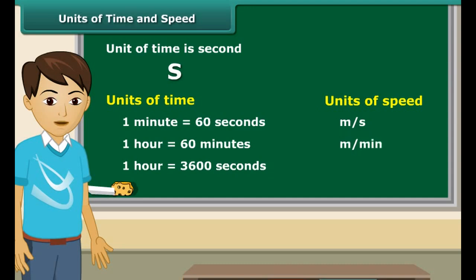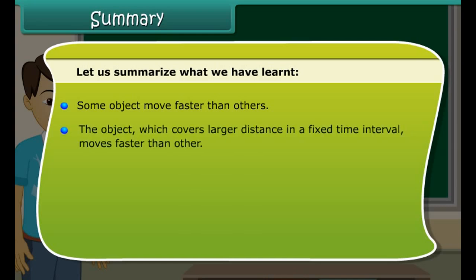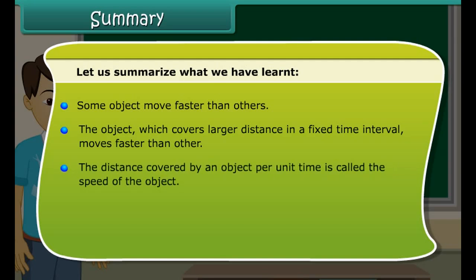The basic unit of time is the second, with symbol S. Larger units of time are minutes and hours. One minute is equal to 60 seconds, and 60 minutes are equal to one hour. The basic unit of speed is meter per second. We can also express it in other units such as meter per minute and kilometer per hour. We write the symbols of all units in singular.